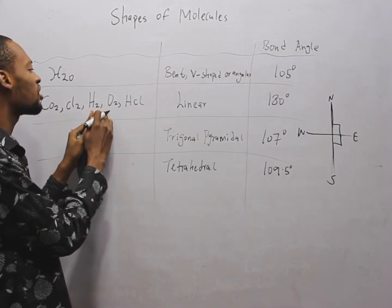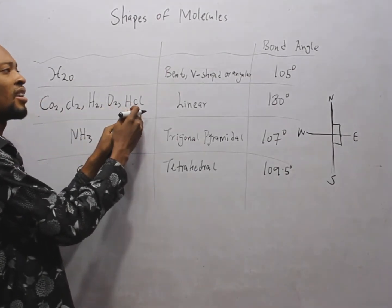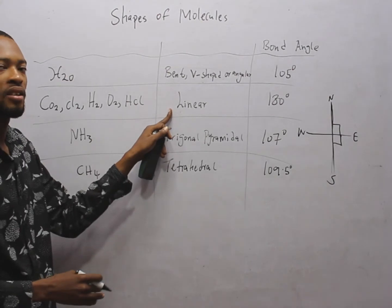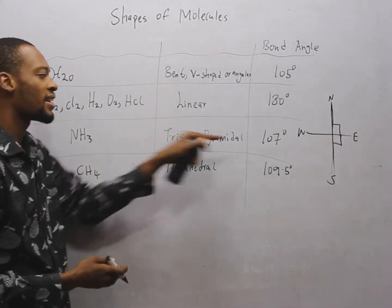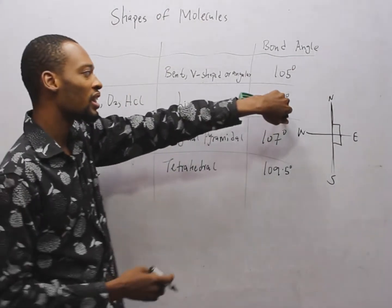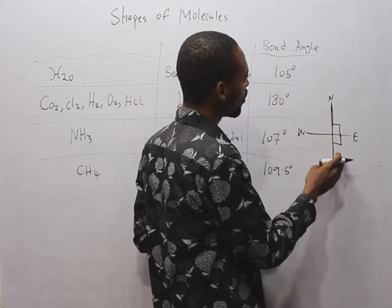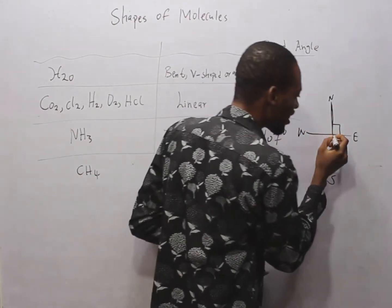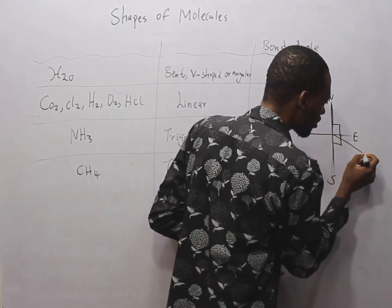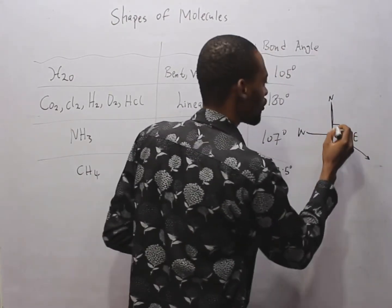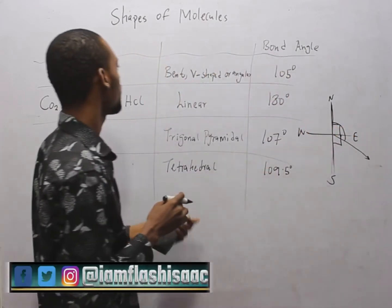Carbon dioxide, chlorine, hydrogen, oxygen and hydrogen chloride, they are linear. They are straight. This is why the bond angle between them is 180 degrees. If here to here is 180 degrees, this implies that 105 degrees is slightly around here. So, this is the bond angle in water.